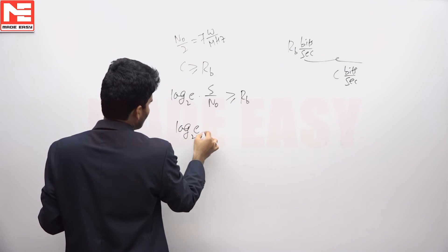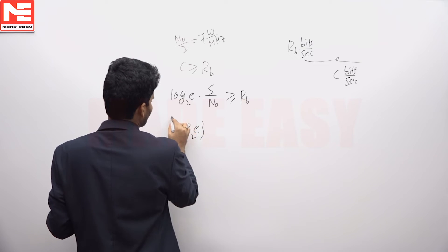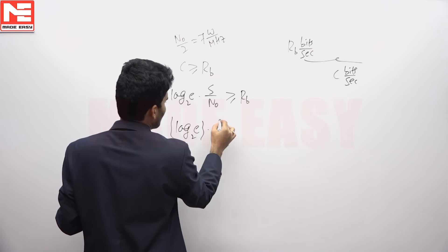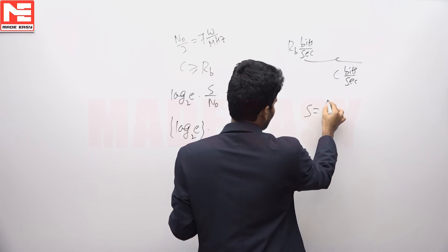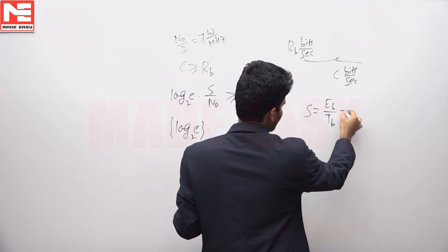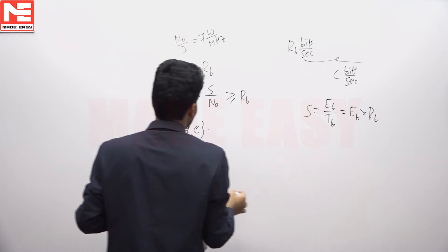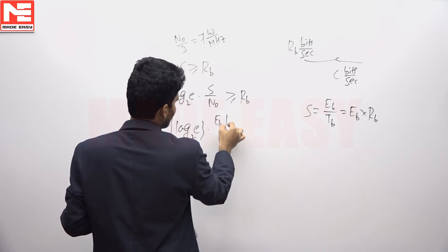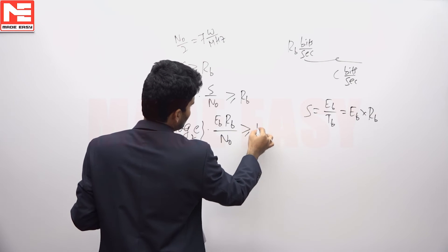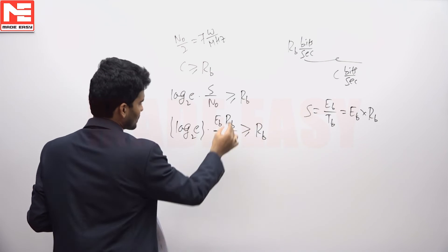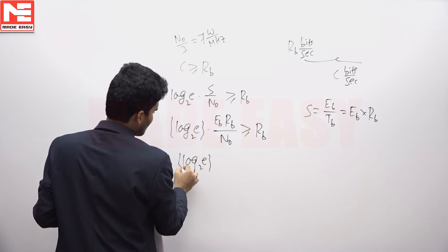Now S, power equals energy by time, we can write so S equals EB by TB. TB, 1 by TB equals RB, so S equals EB times RB. So EB times RB by N0 should be greater than or equal to RB. RB will be cancelled.